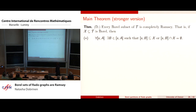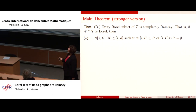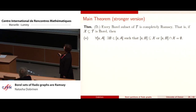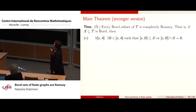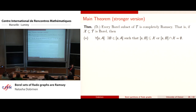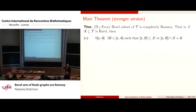Completely Ramsey here refers to the sense of Galvin-Prikry but with respect to the metric topology in terms of Milliken strong trees, not the Ellentuck topology.